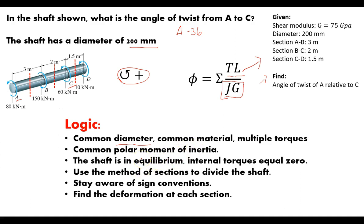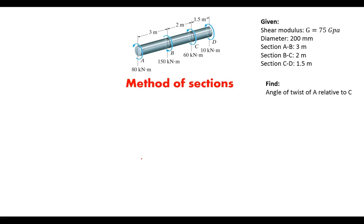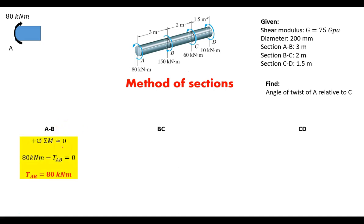Let's draw mini free body diagrams using the method of sections for sections AB, BC, and CD. For the first section, 80 kilonewton-meters is applied to the shaft. The sum of moments equals zero, so the internal reaction torque from A to B is 80 kilonewton-meters. For section B to C, we have our 80 and 150 kilonewton-meters reacting with each other.